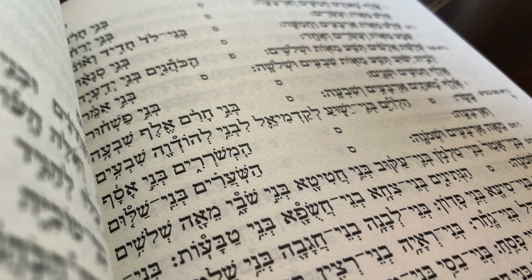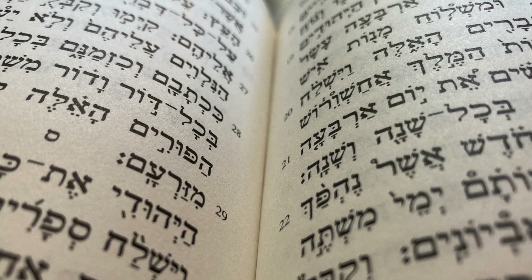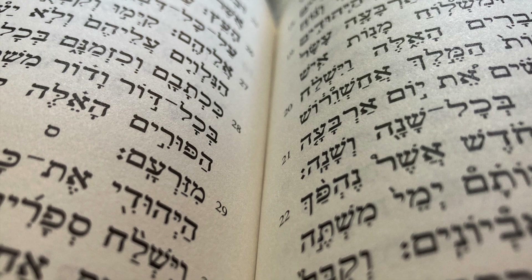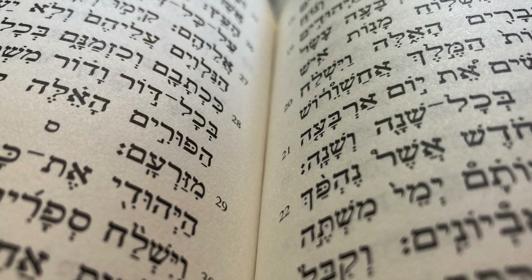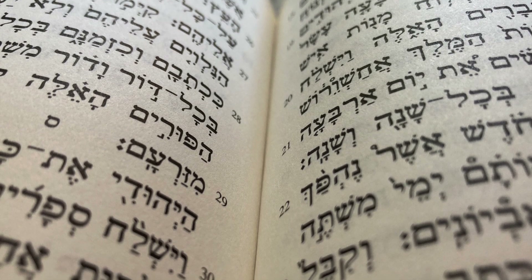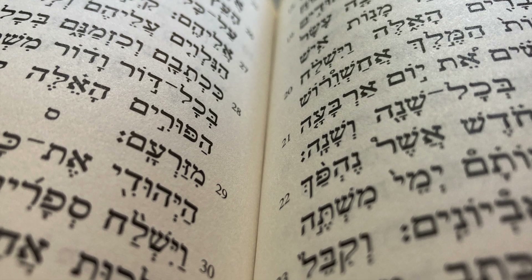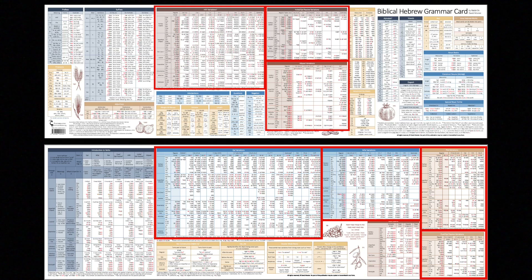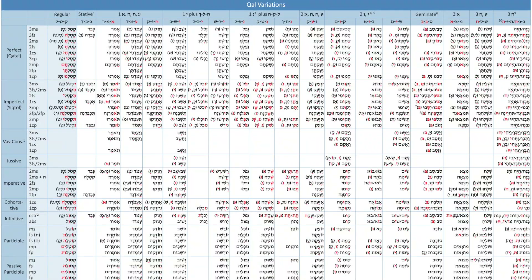They usually have different vowels, and quite often one of your three root letters disappears. And for this, I made seven gigantic charts, one for each stem in Biblical Hebrew. Each stem is almost like a flavor of a verb.